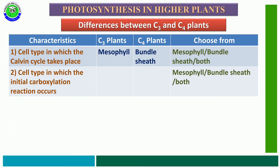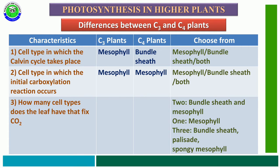The second characteristic feature is the cell type in which the initial carboxylation reactions occur. The given options are mesophyll, bundle sheath, or both. The correct answer is: in both C3 and C4 plants, initial carboxylation reactions take place in mesophyll cells only.